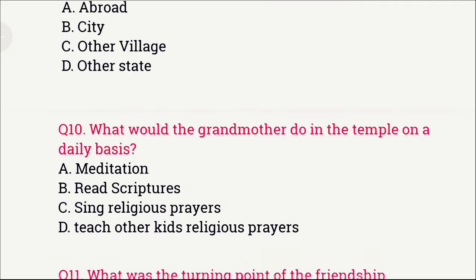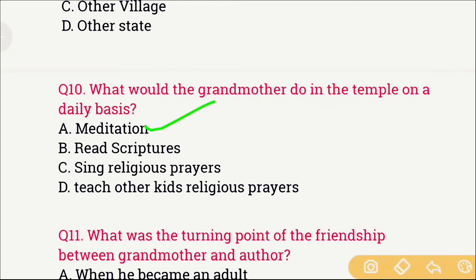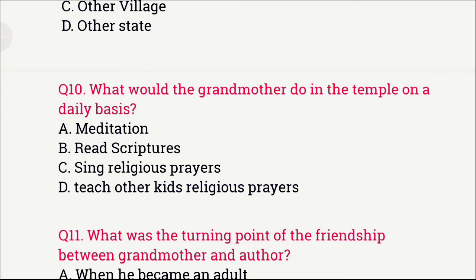Question number 10: What would the grandmother do in the temple on a daily basis? As discussed, the grandmother would go to the temple attached to the school. The options are: A) Meditation, B) Read scriptures, C) Sing religious prayers, and D) Teach other kids religious prayers. The right answer is option B, which is read scriptures — meaning the grandmother would read scripture books in the temple.